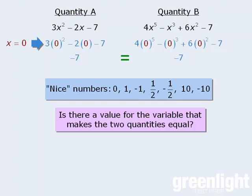At this point, it must be the case that either the two quantities are always equal for every value of x, or the two quantities are not always equal. So if we choose some other number at random and plug it in, and the two quantities are still equal, then there's a good chance that the two quantities will be equal for all values of x, which means the answer will be C.